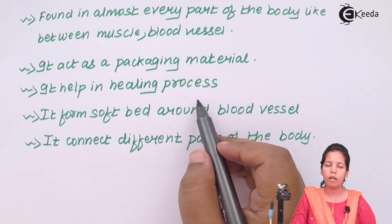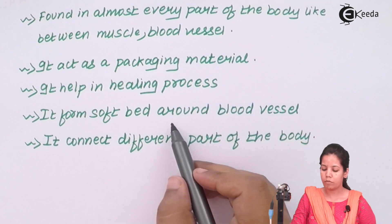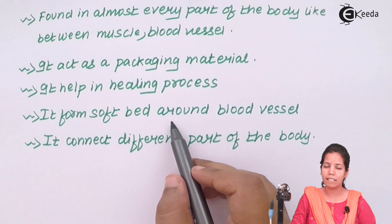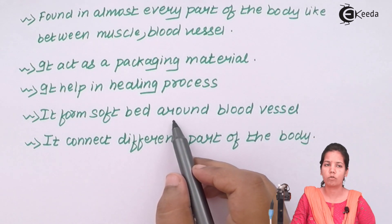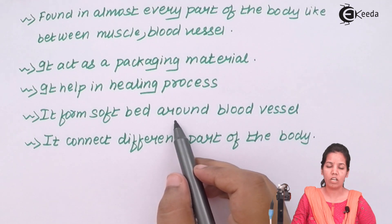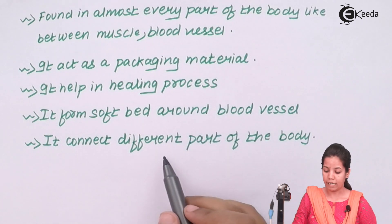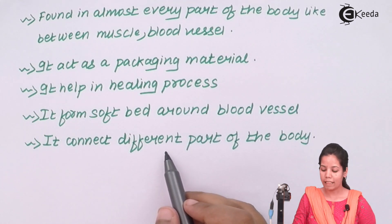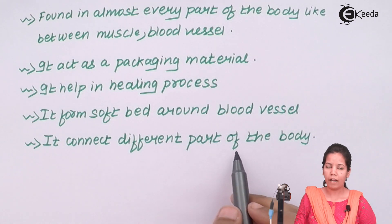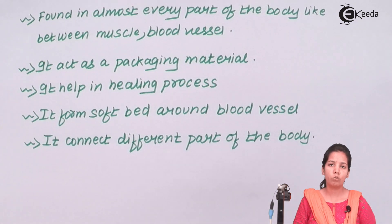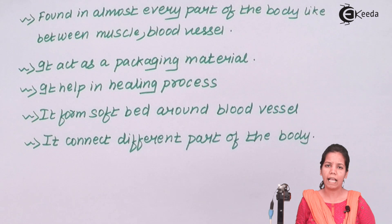Connective tissue forms a soft bed around blood vessels. Blood vessels 90% of the time consist of connective tissue, and since blood vessels reach every part of your body, being adhered to connective tissue makes them more flexible, makes their junctions more tight, and allows them to travel around the periphery inside the body.